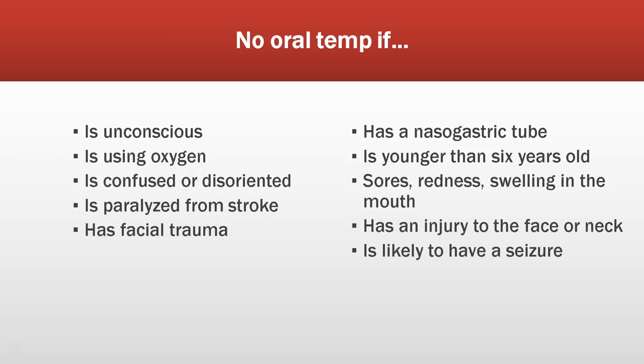For an oral temperature to be accurate, the person needs to be able to close their mouth around the thermometer for up to a minute or more. Being unconscious, confused, disoriented, paralyzed from a stroke, having facial trauma, being younger than six years old, or any injury to the face or neck may indicate we need an alternative route. Other examples include if the resident is on oxygen, has a nasogastric tube, mouth sores, swelling, recent dental work, or recent seizures — we would not want to put anything in their mouth.